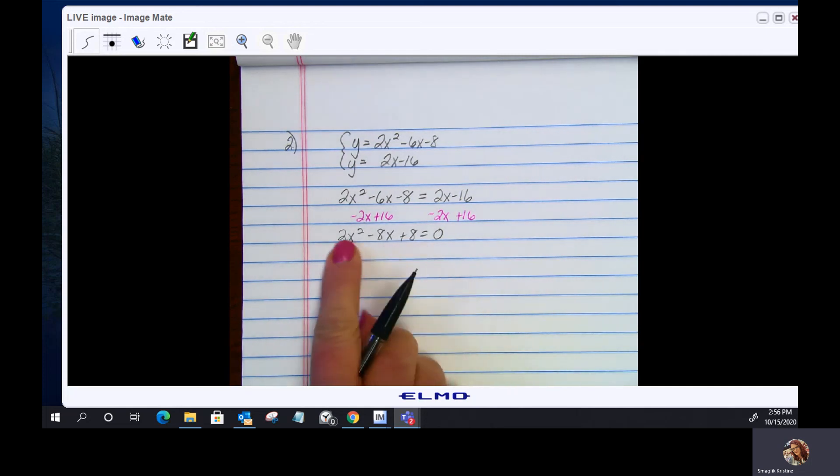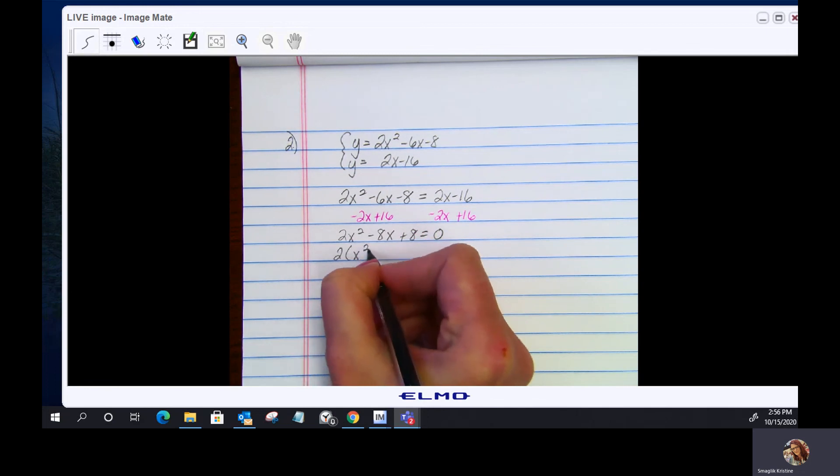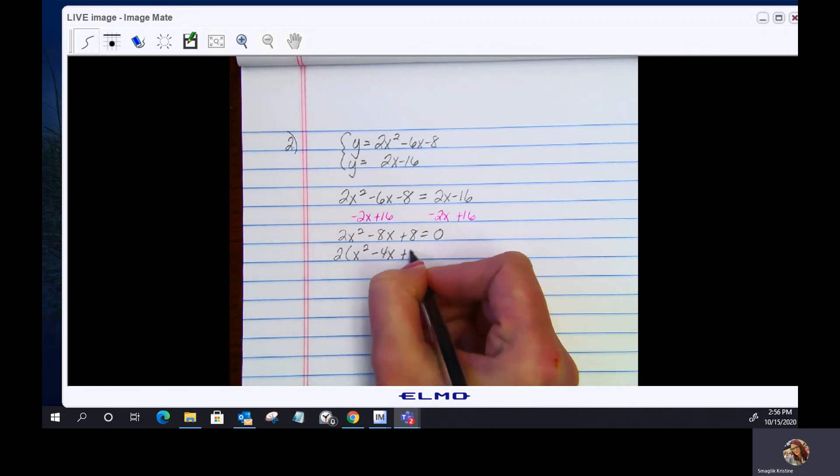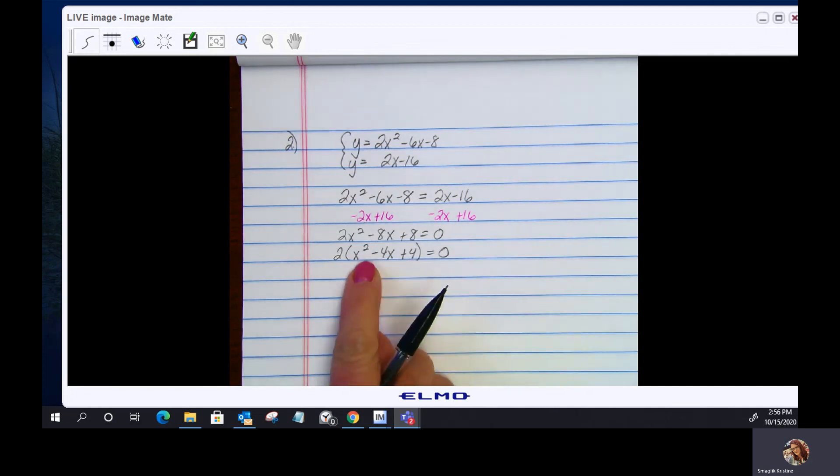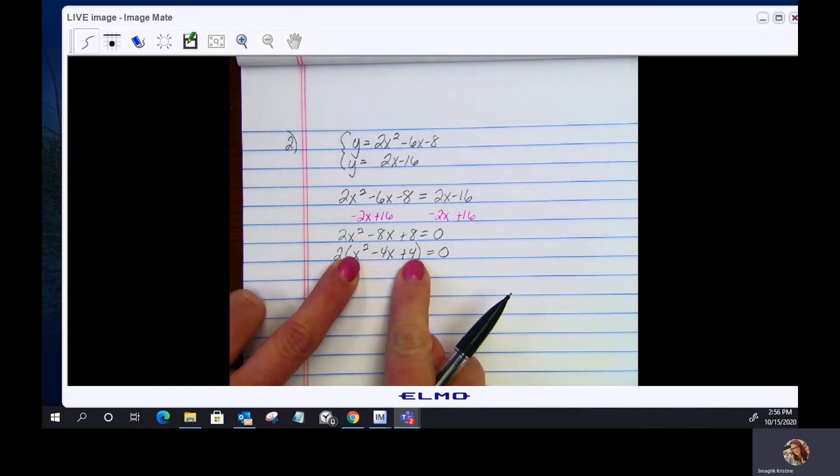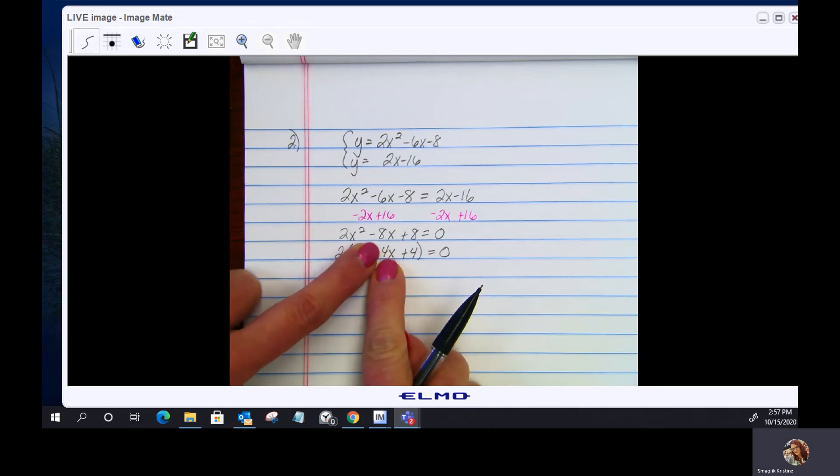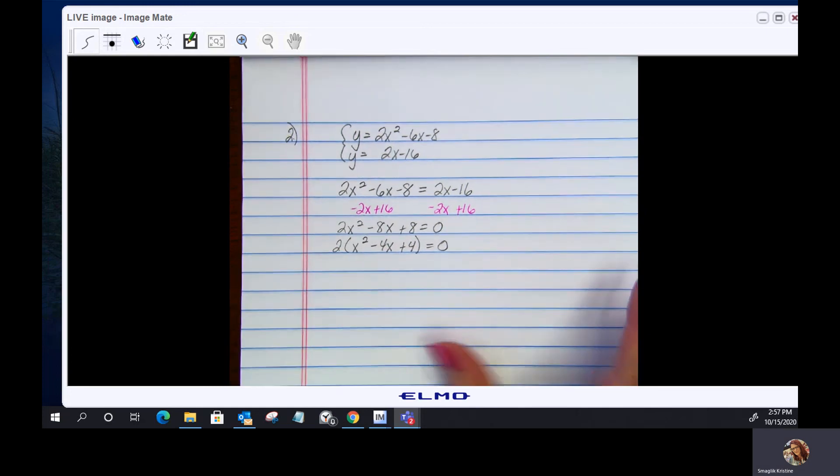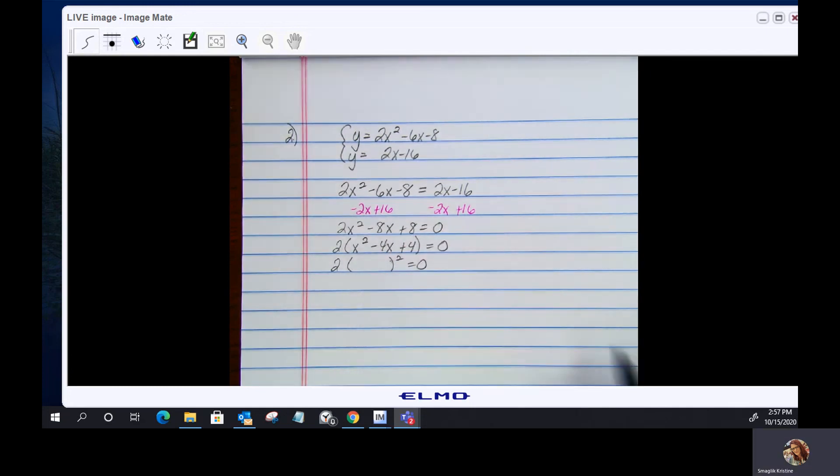Looking at this quadratic, I can see that I can factor out a GCF first. Each of these terms is divisible by 2. 2 times x squared minus 4x plus 4 equals 0. And if you look, this is a perfect square trinomial. I have a perfect square here, a perfect square here. Square root of x squared is x. Square root of 4 is 2. That's 2 times x. If we double it, we get 4. So I'm just going to go ahead and I'm going to factor this as a perfect square trinomial.